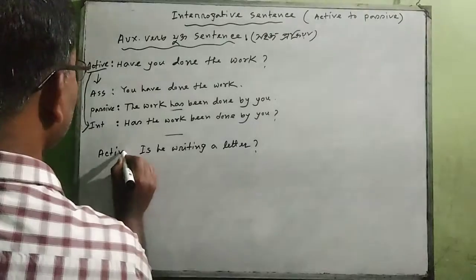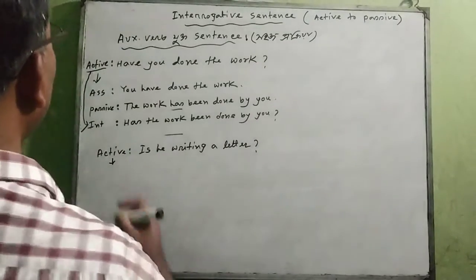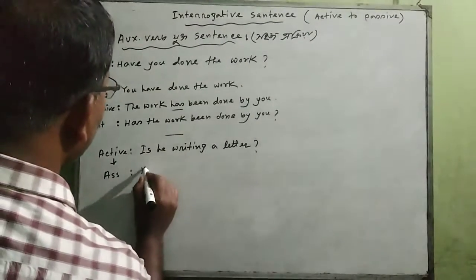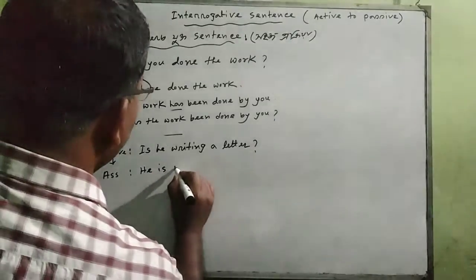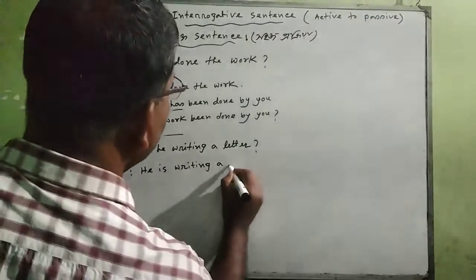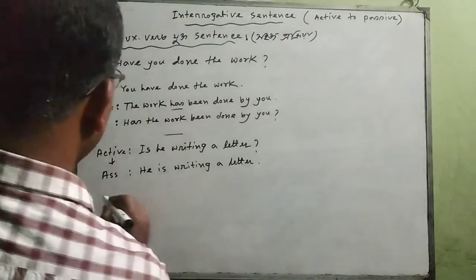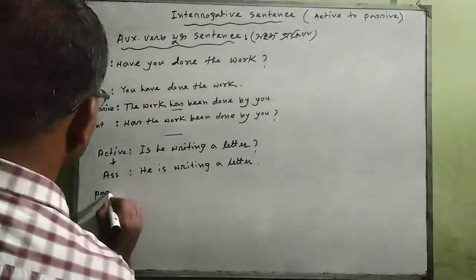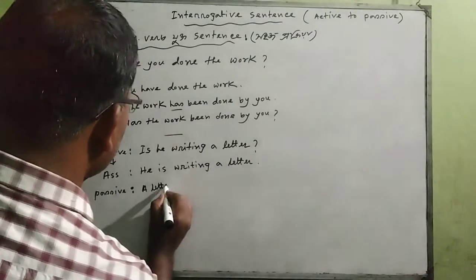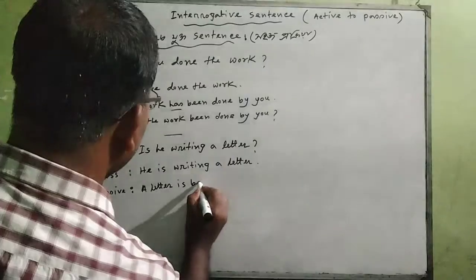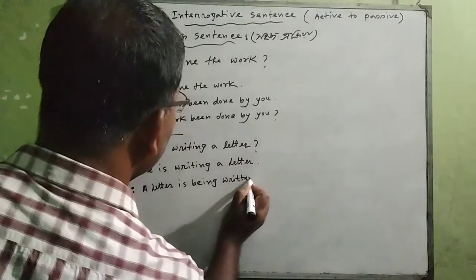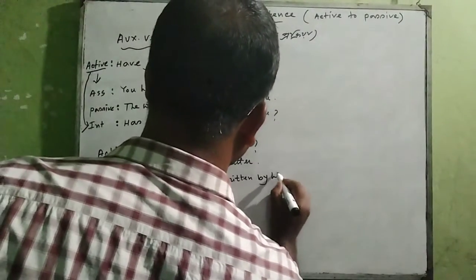Is he writing a letter? This is active voice. So for passive: writing a letter — the object becomes the subject. Is a letter being written? It is written — so we get 'Is a letter being written...'